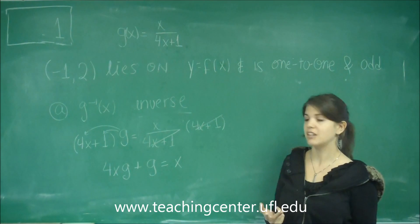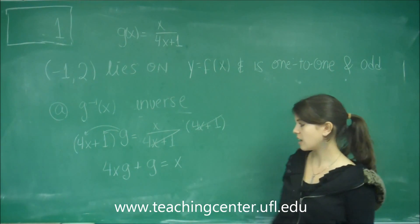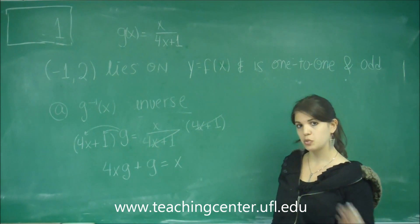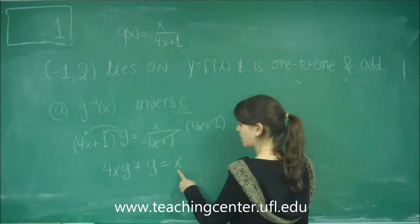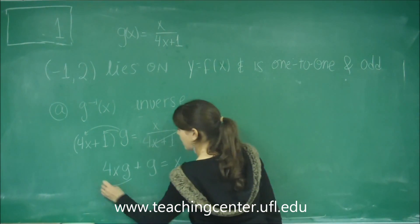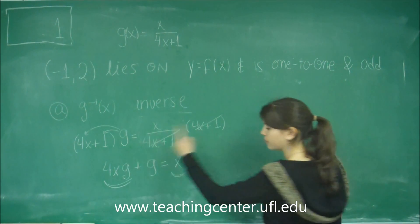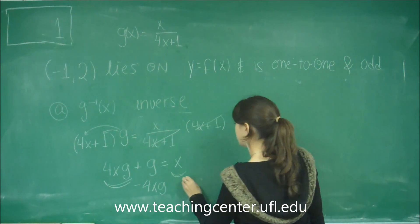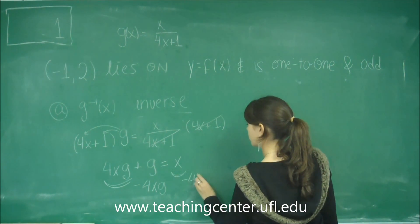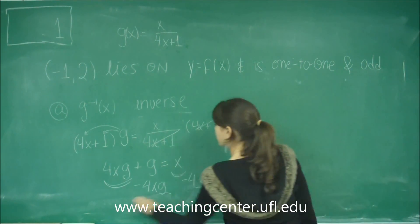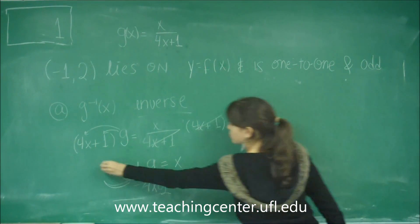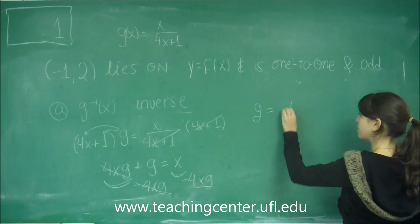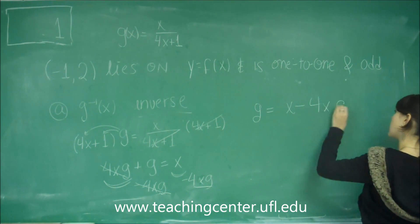The method that I'm using is I'm trying to solve for x so that I could switch the variables at the end. I'm trying to solve for x, so to do that I want to get all the x's over to one side to group them together. This has an x and this has an x, so let's bring this guy over here. I'm going to subtract 4xg from both sides and I'm going to get a g on this side and x minus 4xg on the other side.